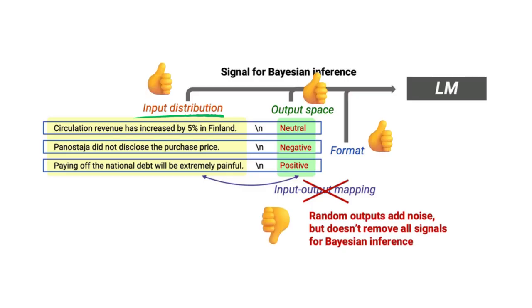To summarize these early findings, the input distribution signal is really key. The output space and format signal are also important, but surprisingly, the input-output mapping signal is not that important, which means you don't need to have the right output for each example for the model to understand the in-context learning tasks. This is a pretty big deal.